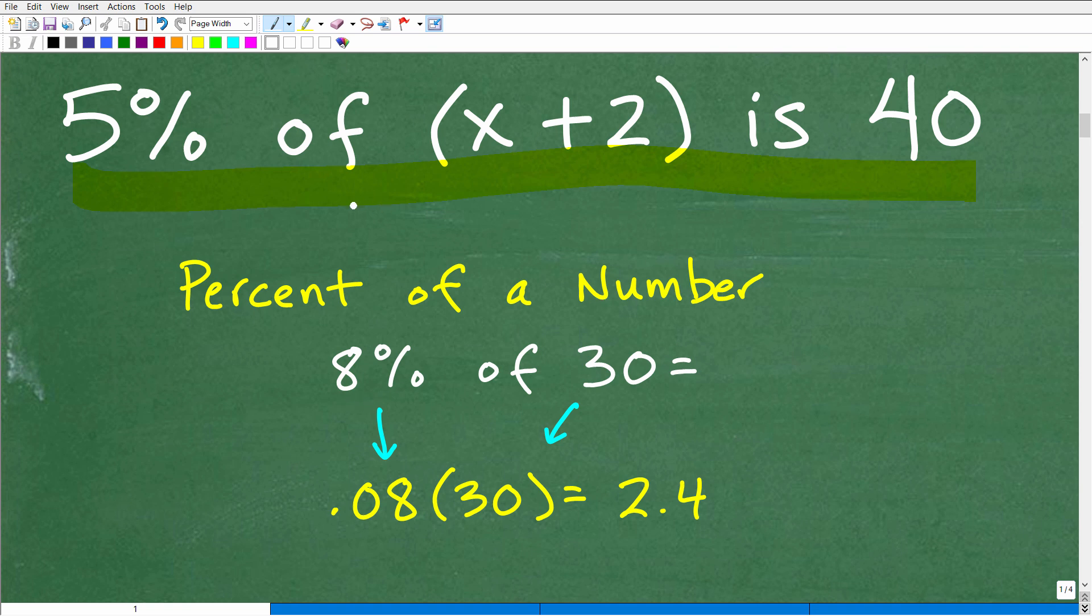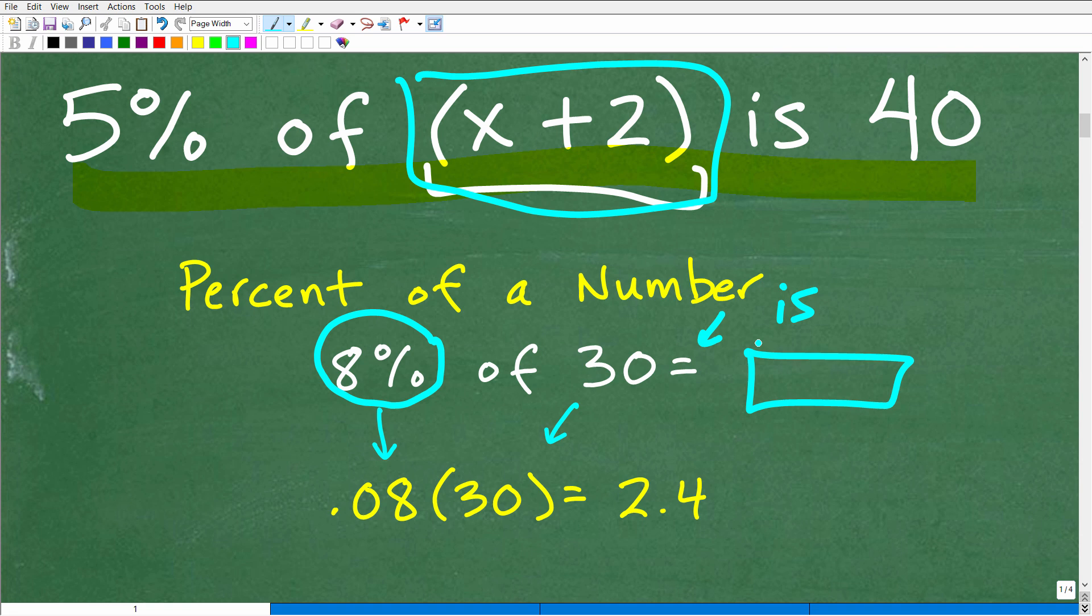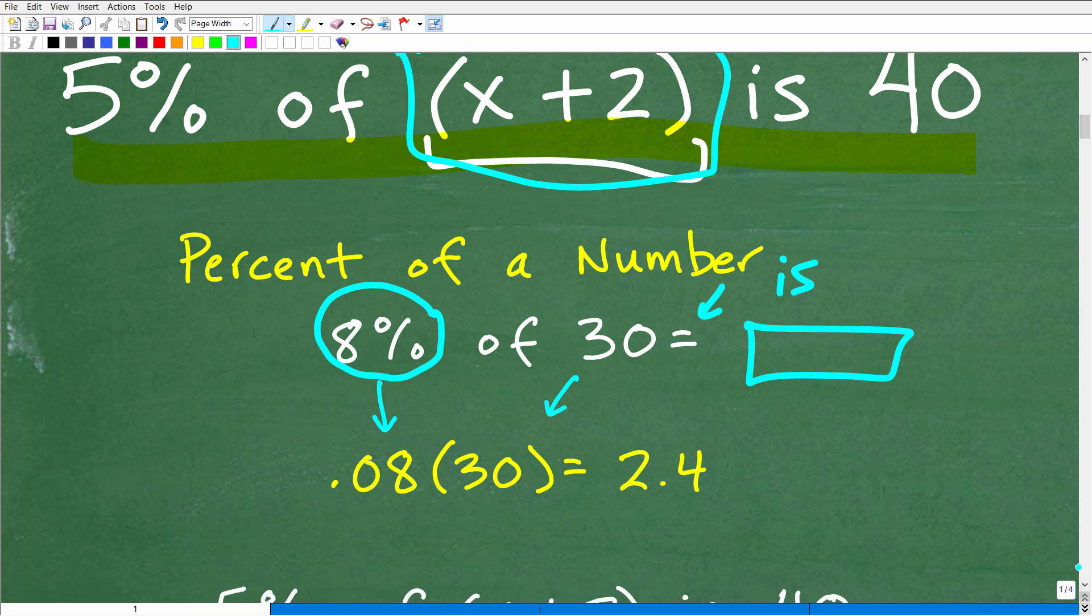Okay, we're trying to find 5% of something right here, but let me say 8% of 30. Let's break this down further. 8% is right here of 30. And then the equal sign is the word is. 8% of 30 is what? What number? Well, when we want to solve a percent problem like this, what are the skills and concepts involved? Well, the first thing we need to do is to change percent into a decimal.